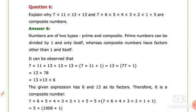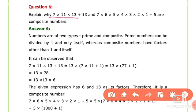First of all, let's check the first number which is 7 × 11 × 13 + 13. Now we will take out the common factor 13, so we have 13 × (7 × 11 + 1). That means we have 13 × (77 + 1). Now, 13 × 78.